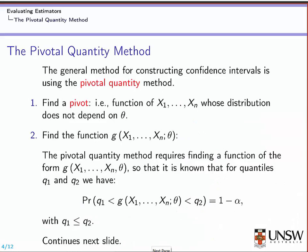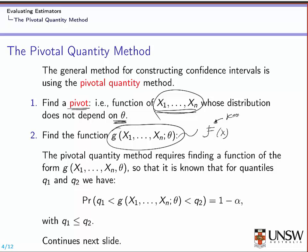Let us now discuss a more general way of finding a confidence interval. This method is known as the pivotal quantity method. The pivotal quantity method requires the following steps. First, you find the pivot, which is a function of your data x1 to xn, with the distribution of this function being free of theta. Once you have this function g with a known distribution, you can determine the quantiles from that distribution, since the CDF does not depend on theta.